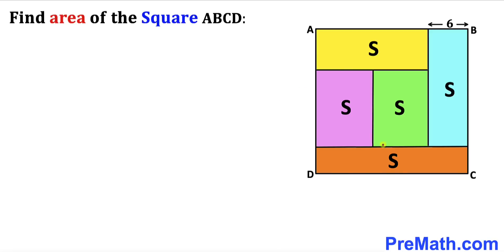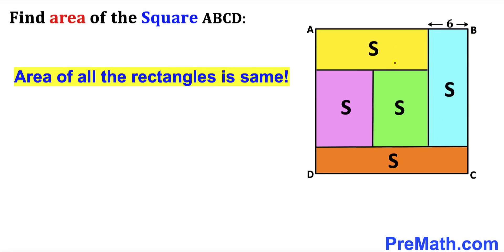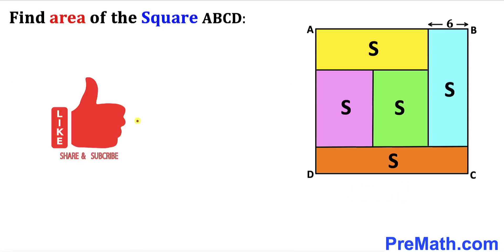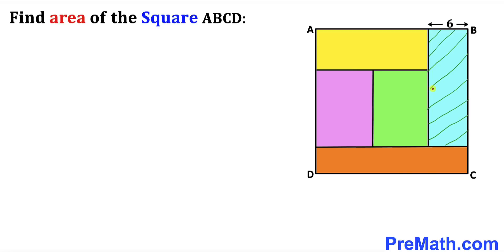Welcome to Pre-Math. In this video we have a square ABCD that consists of five rectangles: a yellow one, a purple one, a green one, a blue one, and a brown one. The area of all these rectangles is exactly the same. Furthermore, the side length of this blue rectangle is six centimeters, and we are going to calculate the area of square ABCD.